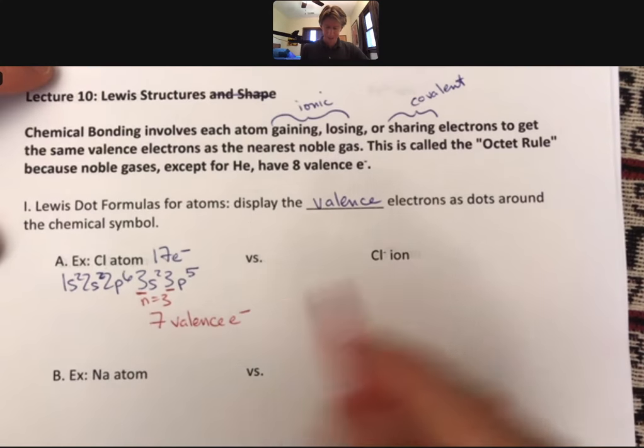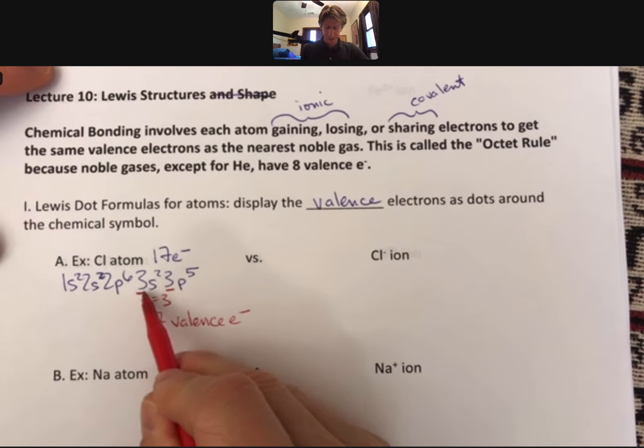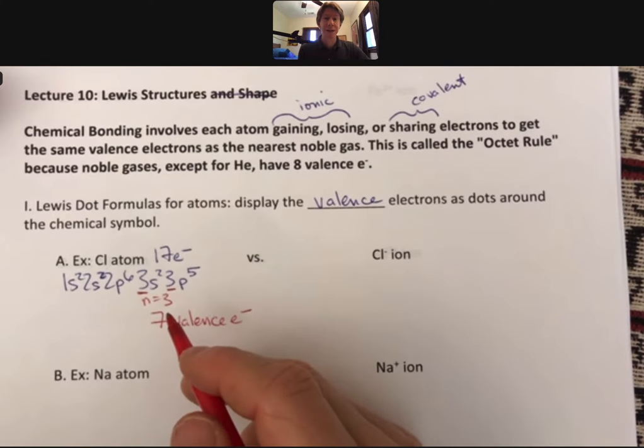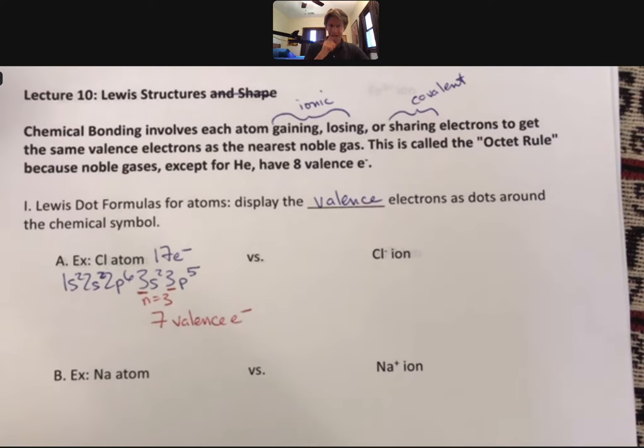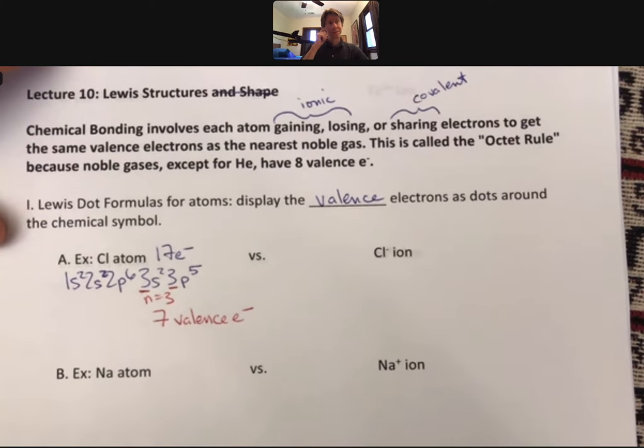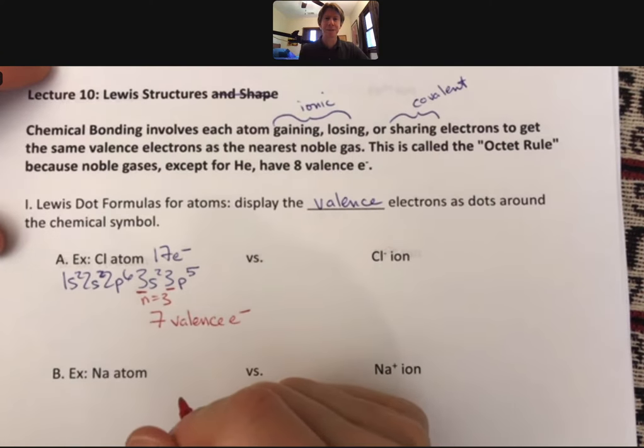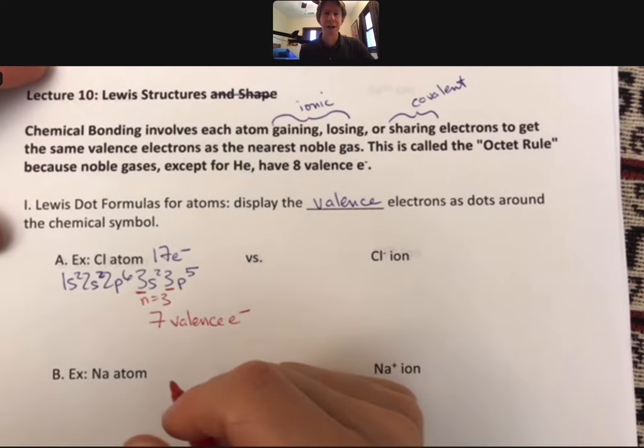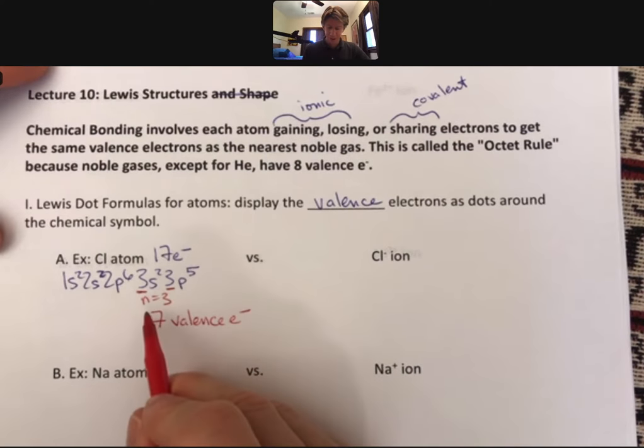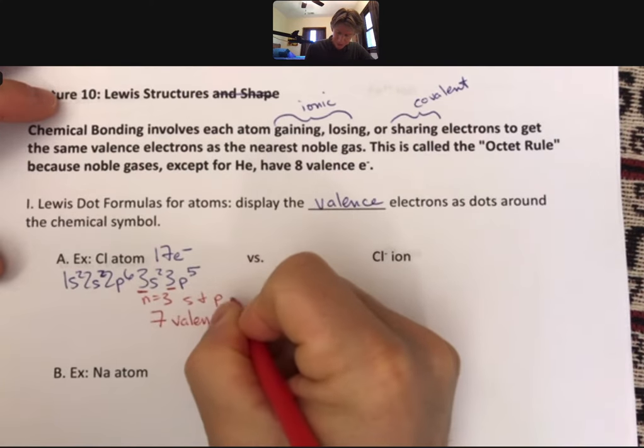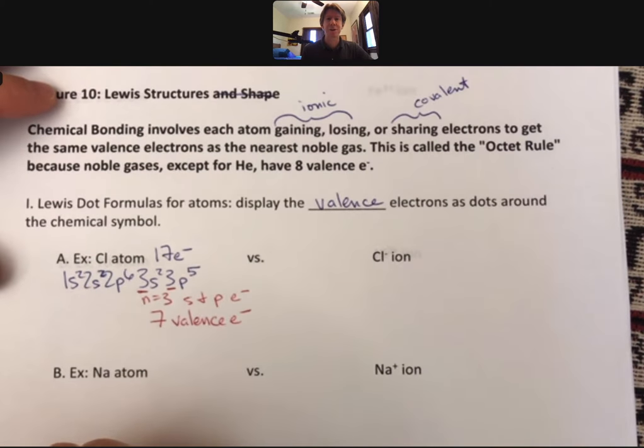I said the highest value of n, the s and p electrons. Let's keep in mind that it's only the s and p electrons, because sometimes there will be d electrons as well. We just want to make sure valence electrons are just the highest value of n, s, and p electrons.